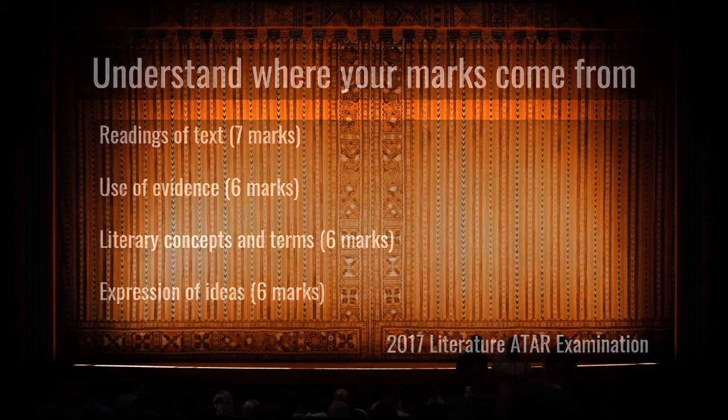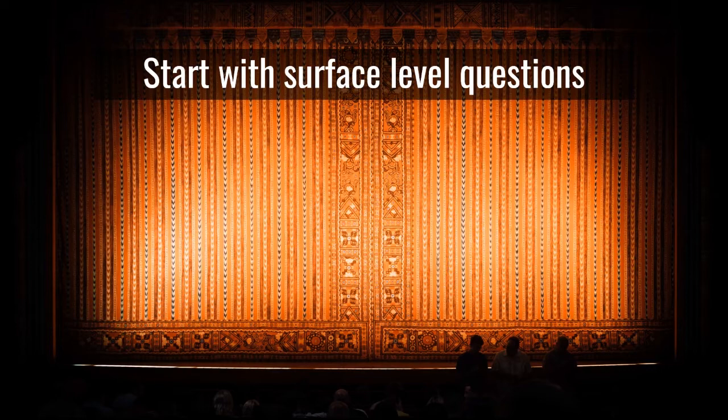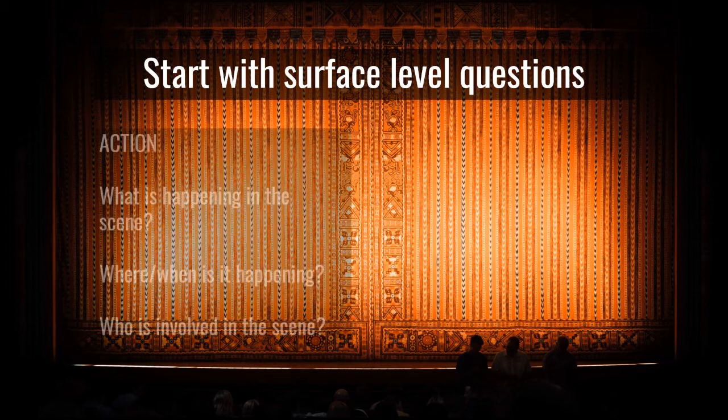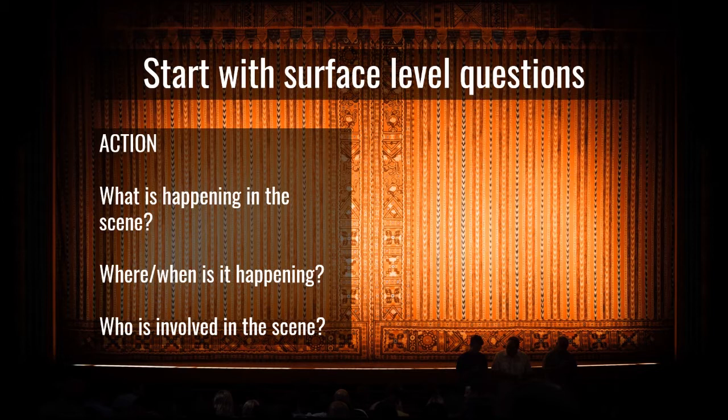Let's start with some surface level questions that can help us get to a reading for a drama text we haven't seen before. I always encourage students not to dive straight into the detail, but to step back and look at the text as a whole. Start by looking at the action of the scene: what's happening, where and when is it happening, and who's involved?